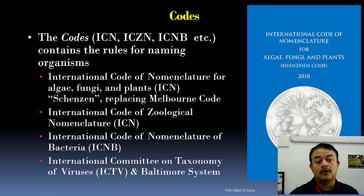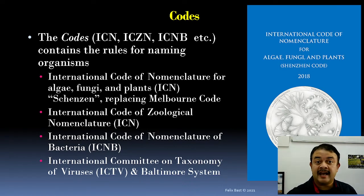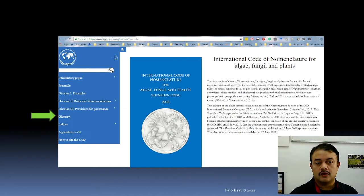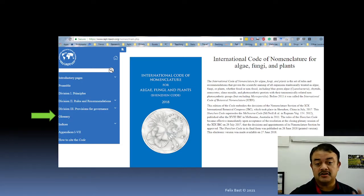The latest code currently in force as of 2021 is the Shenzhen Code, adopted in Shenzhen, China in 2018. This is the latest code of nomenclature for plants, fungi, and algae together. To learn more, check out the IAPT's Shenzhen Code website — that is the best option.